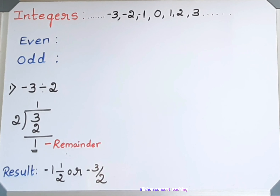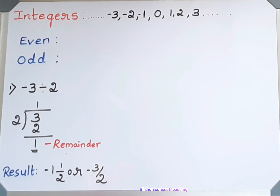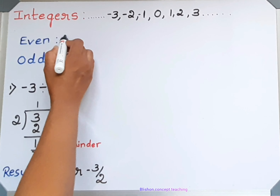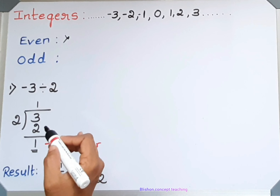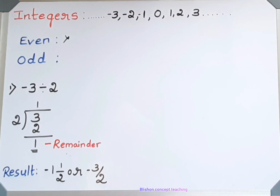I have divided minus 3 by 2. You can observe here the remainder is 1. It means it is not exactly divided by 2, so minus 3 is not an even number. According to the definition of odd number, when an integer is divided by 2 it either leaves a remainder or the result is a fraction.